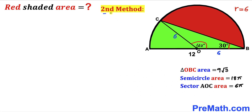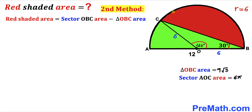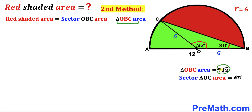Now for Method 2. The red shaded area equals the area of sector OBC minus the area of triangle OBC. We have already calculated the area of triangle OBC as 9√3, so our task now is to calculate the area of sector OBC.